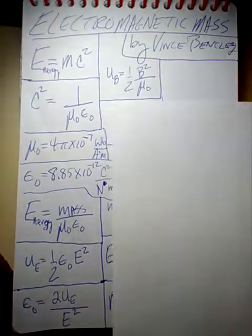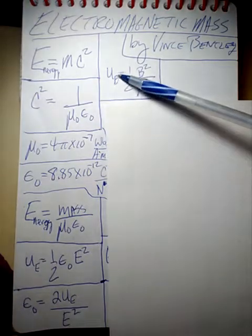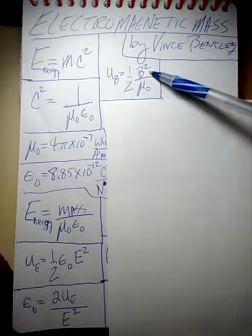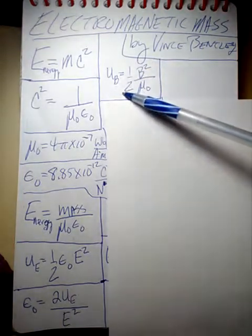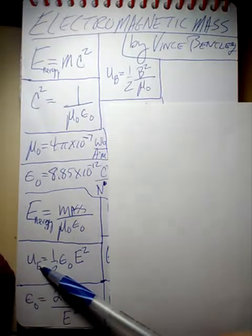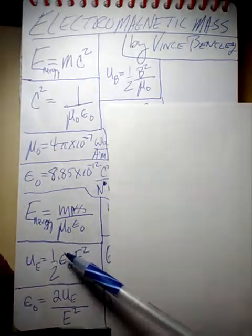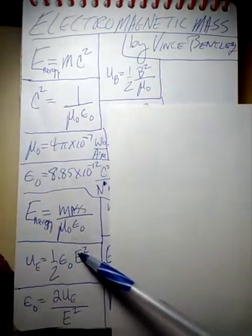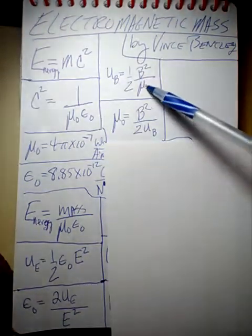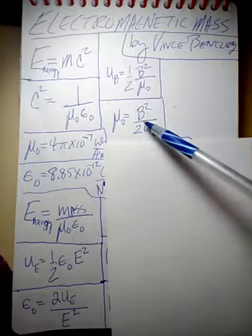The next thing we have is the magnetic energy density. The magnetic energy density is equal to the magnetic field squared divided by 2 mu naught, and mu naught is this. This is the electric energy density field is one-half epsilon naught, that's this constant, times the electric field squared. And so we can solve for mu naught right here. We'll do a little bit of algebra, we get this.